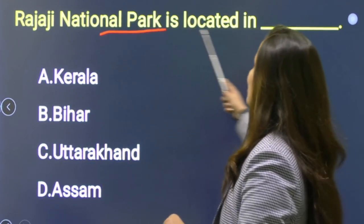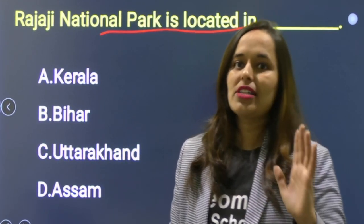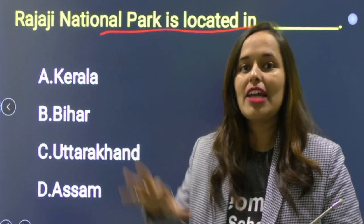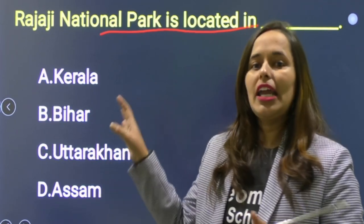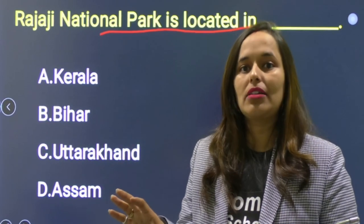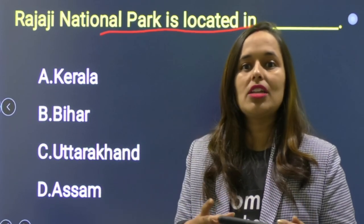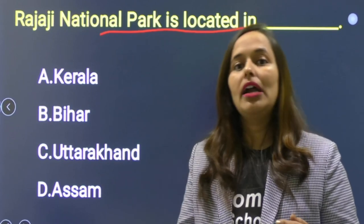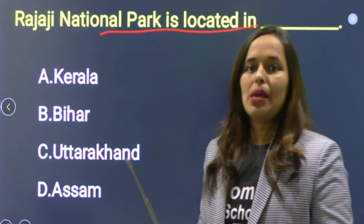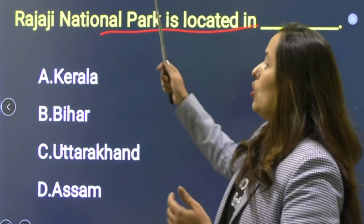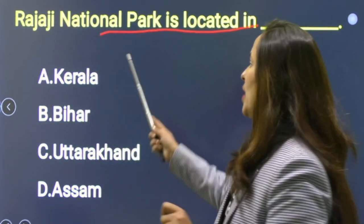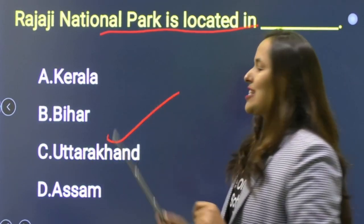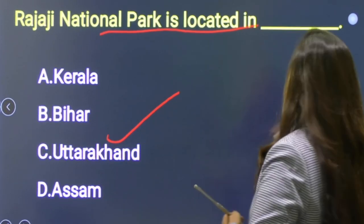Next: Rajaji National Park is located in which state? Options: Kerala, Bihar, Uttarakhand, Assam. Correct answer is Uttarakhand — जो Rajaji National Park है वो Uttarakhand में है। Option C is correct.